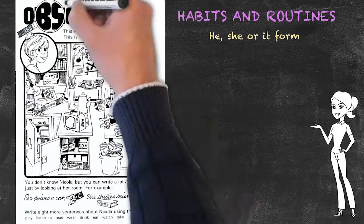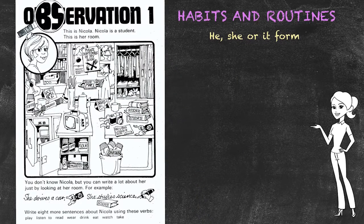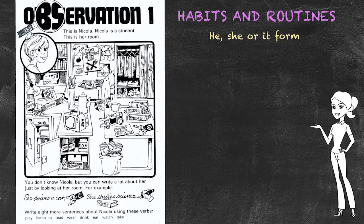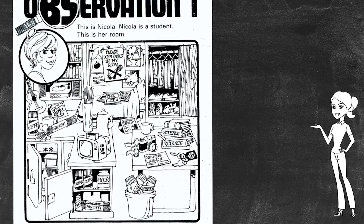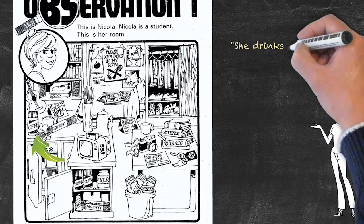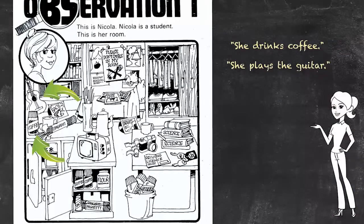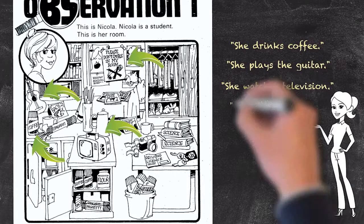Here we'll present students with a picture. They will see various objects in the picture. Based upon the presence of these objects in someone's room, the students will have to make an observation, such as she drinks coffee, she plays the guitar, she watches television, she doesn't smoke.